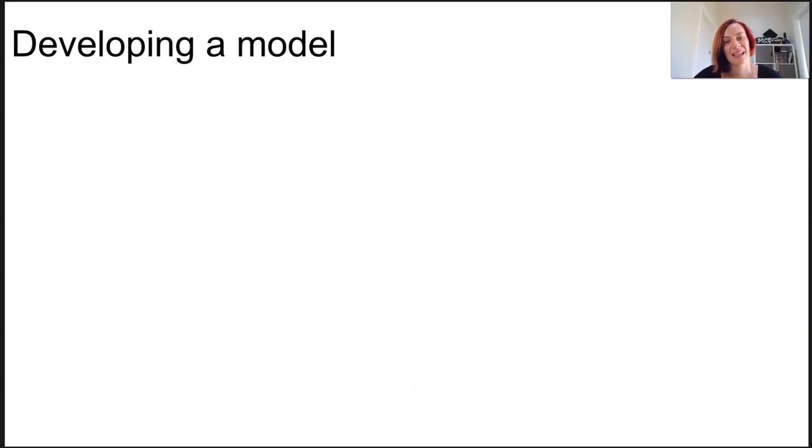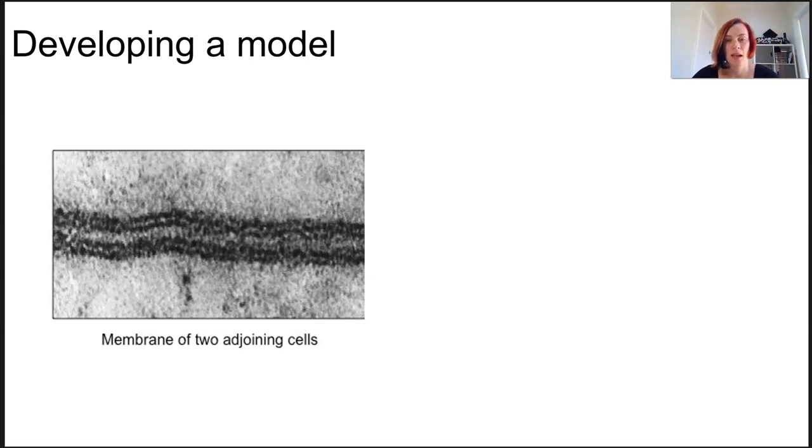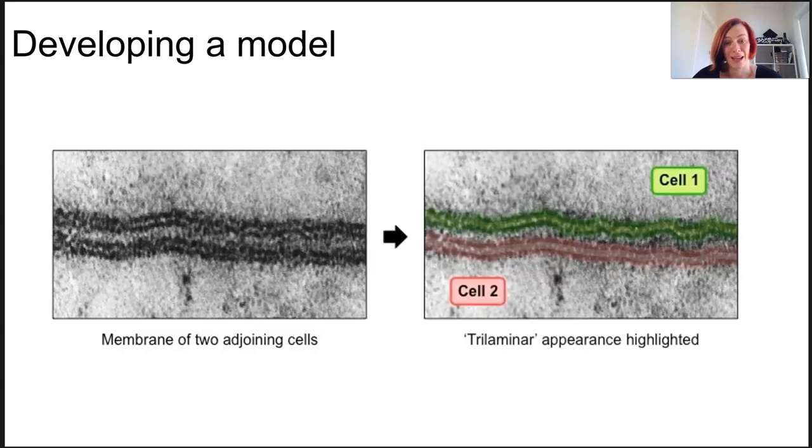Davson and Daniele came along and said, right, we've got a similar picture. This is the picture they came up with, but what they were actually looking at was two adjoining cells. They saw that there were three layers, and we know now that they were looking at cell one and cell two, but they said we're looking at back-to-back bilayers here. So the cell membrane must look like a bit of a sandwich—bread on top and filling in the middle.